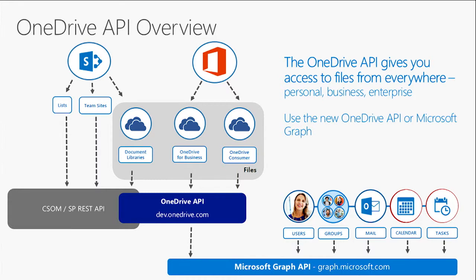OneDrive is the core file storage platform for files in Office 365 that gives developers access to files regardless of where they may live. Office 365 files may be stored in OneDrive Consumer, OneDrive for Business, or Enterprise-wide files may be stored in SharePoint. The good news is the new OneDrive API now gives developers access to those files via a single API.